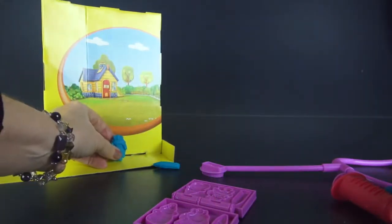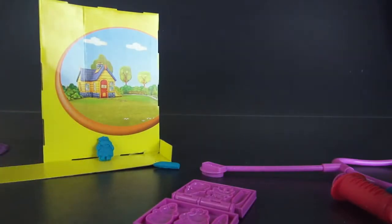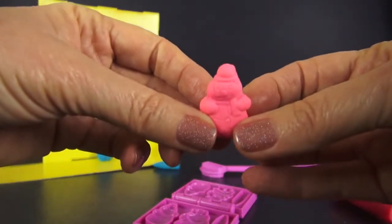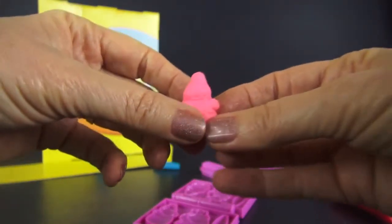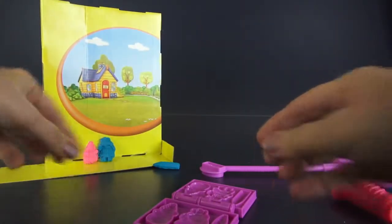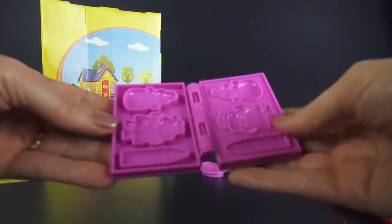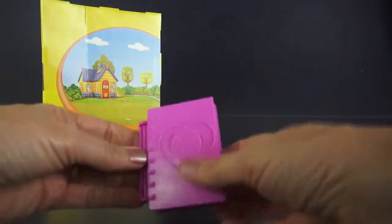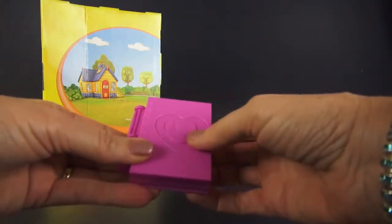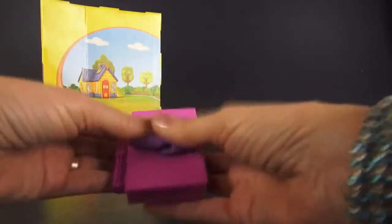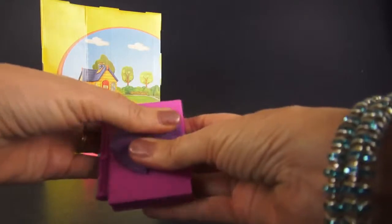And then we have little Hallie out of the mold. So, we will put Hallie right there, and I've actually already made Chilly, and he's right there. I made him out of pink.